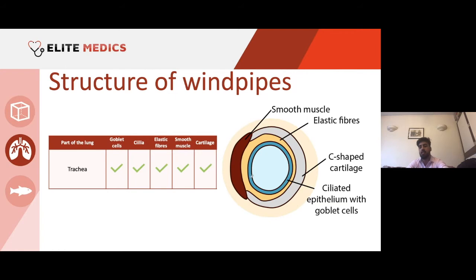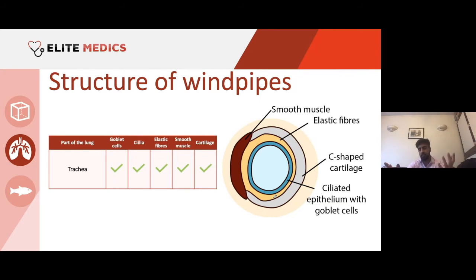In the trachea, I want to point out this C-shaped ring of cartilage — you'll have loads of these throughout the entire trachea, one ring after another. These are to provide support and ensure that when you're breathing in and pressure drops, the trachea doesn't collapse in on itself. You could think of it similarly to stents used in coronary artery disease, which ensure a vessel stays open.